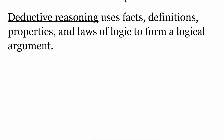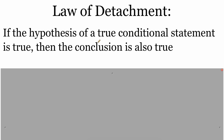Deductive reasoning uses facts, definitions, properties, and laws of logic to help us form a logical argument. The first law of logic that we're going to talk about is something called the law of detachment. What the law of detachment says is if the hypothesis of a true conditional statement is true, then the conclusion also has to be true.